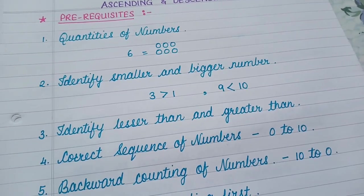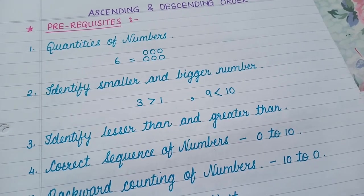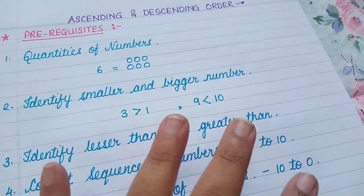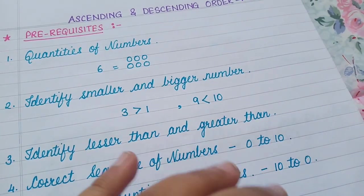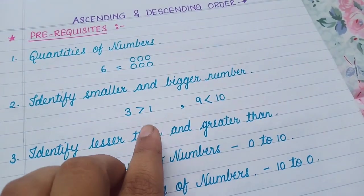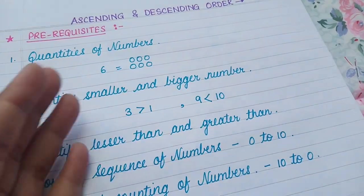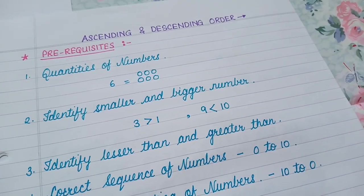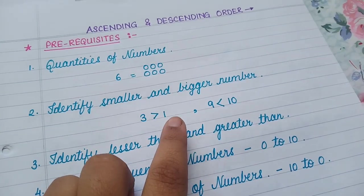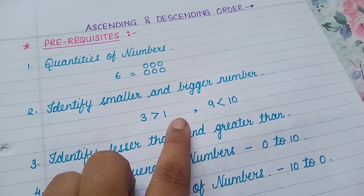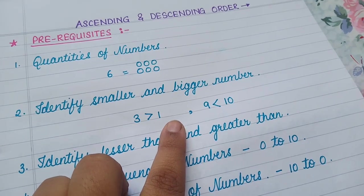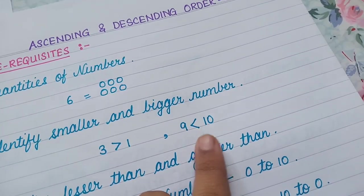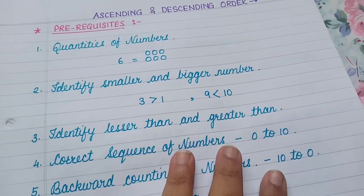Now the second thing is the child must know and identify the smaller number and the bigger number. So if the child is given 2 numbers or 3 numbers, the child must be able to identify the smaller number from that lot and the bigger number from that lot. So here in 3 and 1, 3 is the bigger number and 1 is the smaller number. In 9 and 10, 9 is the smaller number and 10 is the bigger number.